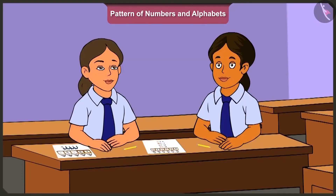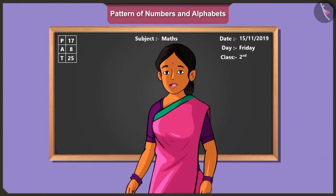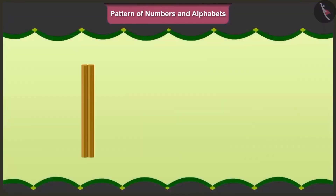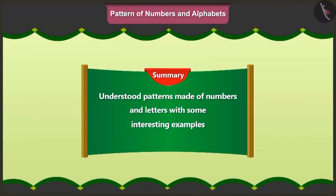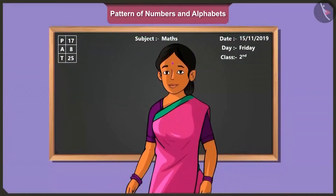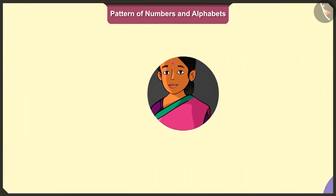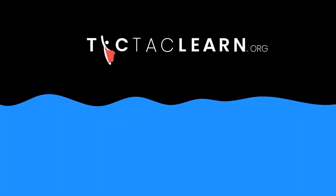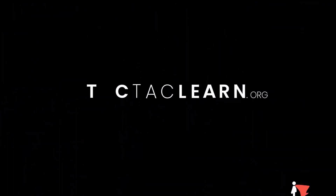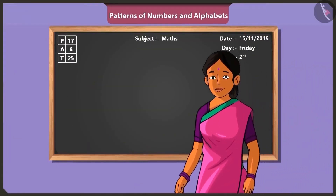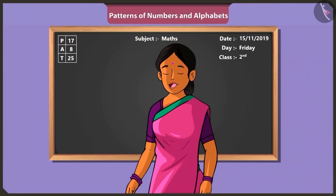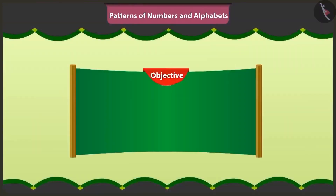So children, in this video we understood patterns made of numbers and letters with some interesting examples. In the next video, we will understand the same with the help of a few more interesting examples. Children, today in this video we will understand the pattern of numbers and alphabets with some interesting examples.